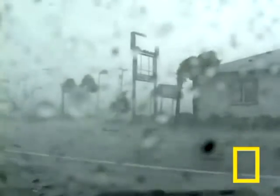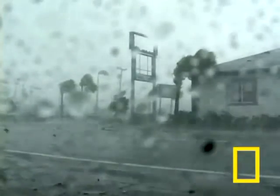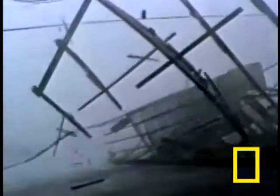When hurricanes make landfall, they can cause tremendous damage. Most deaths associated with a hurricane in the United States happened in the year 1900 when a hurricane hit Galveston, Texas. The 2005 hurricane season, which included the devastating Hurricane Katrina, is responsible for the highest economic damages in the United States.